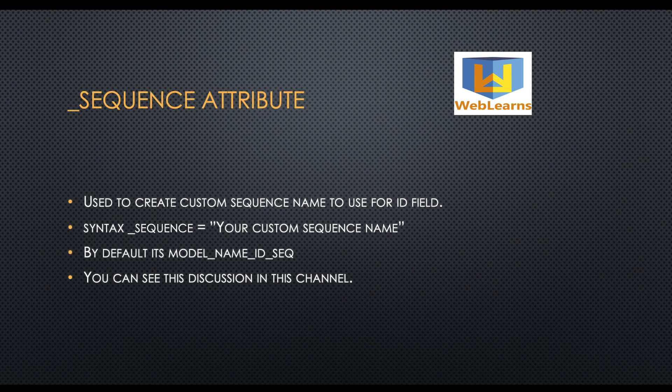The underscore sequence attribute is used to customize the sequence name used by the ID field for a specific model. The syntax is underscore sequence equal to the sequence name. If you do not provide any value, Odoo automatically uses the model name followed by underscore id_seq by default. If you provide a value, make sure it is a unique name. We will see the real test case after this discussion.